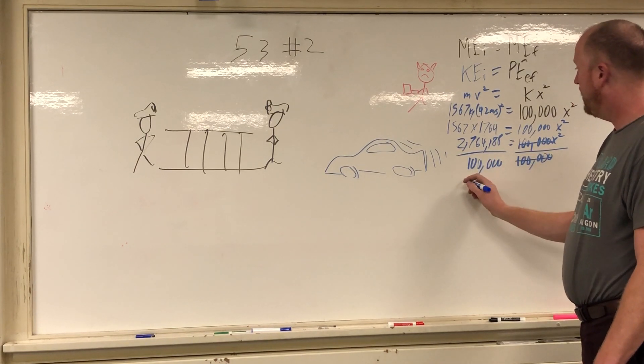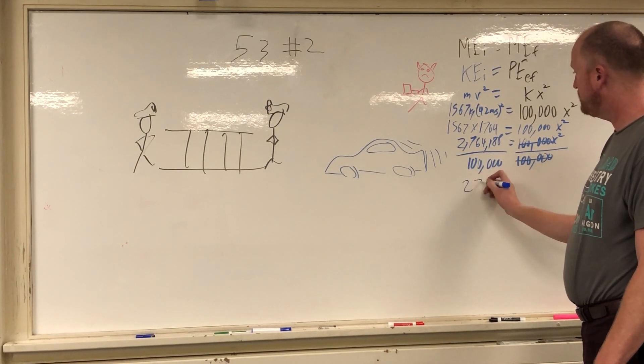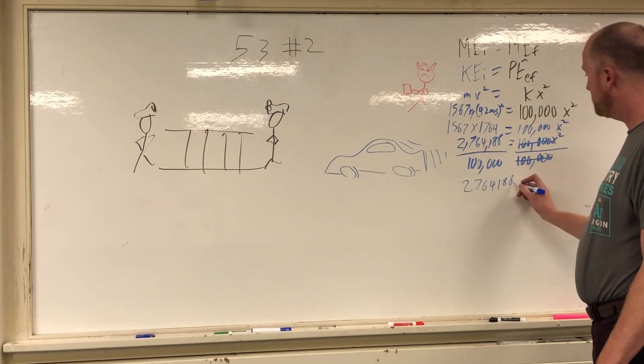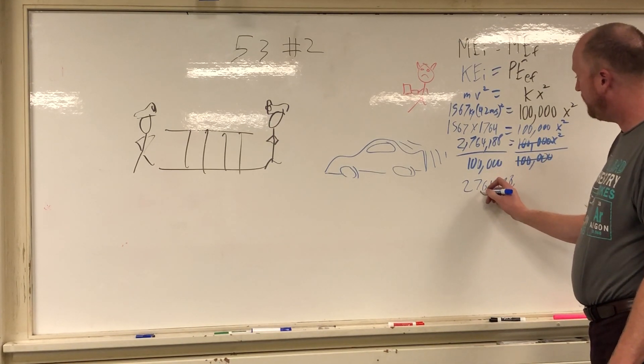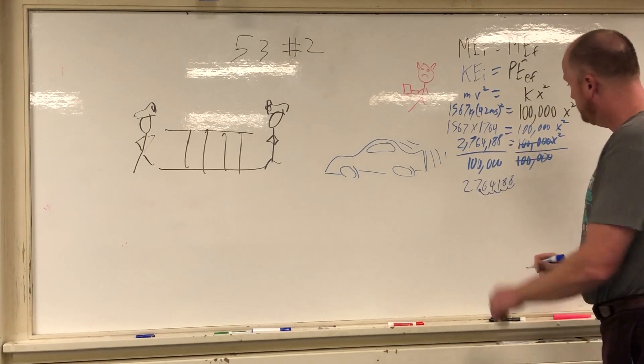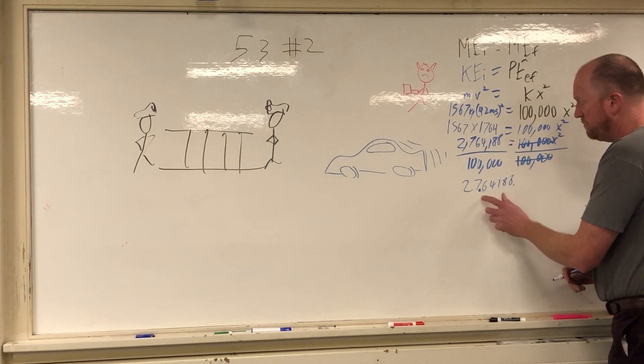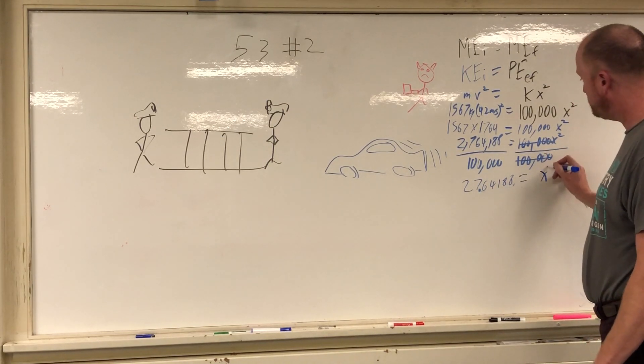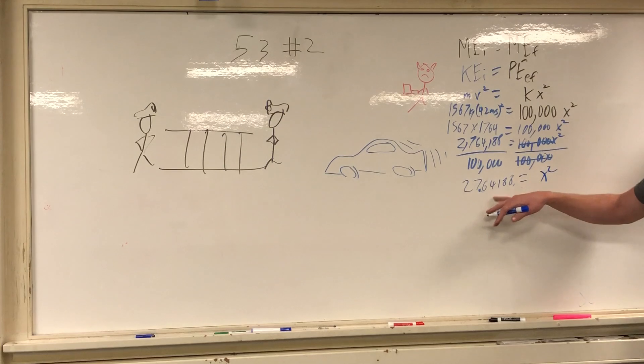Cancel, cancel. Now dividing by 100,000 is very easy. You just simply move the decimal point one, two, three, four, five places. And I get 2764188 moving the decimal one, two, three, four, five places, so I get 27 point six. That is equal to x squared. It's a little over 27.